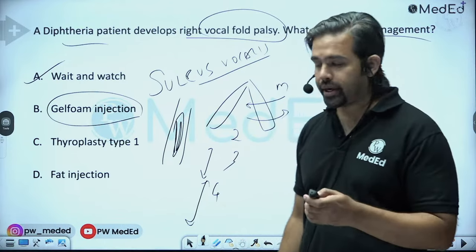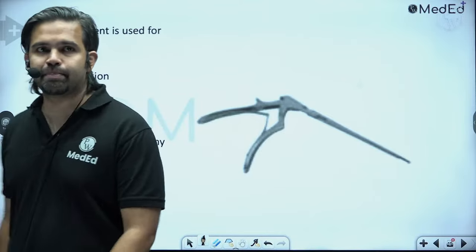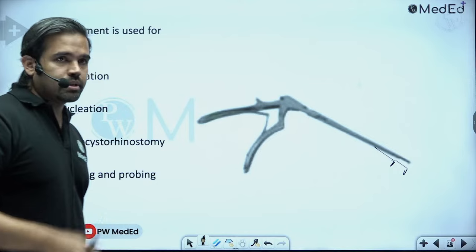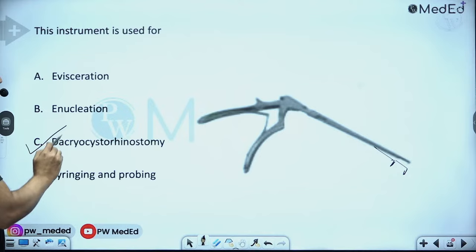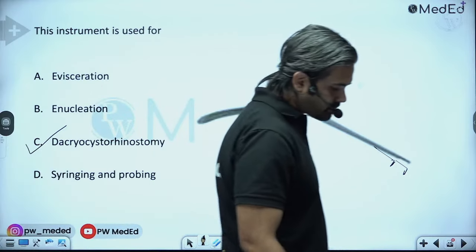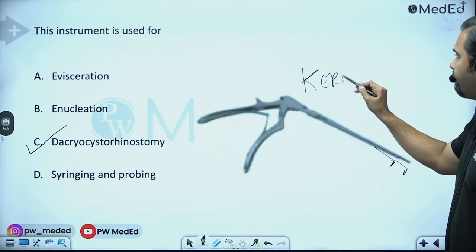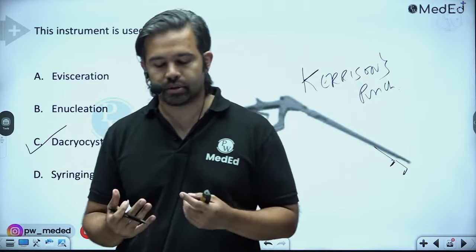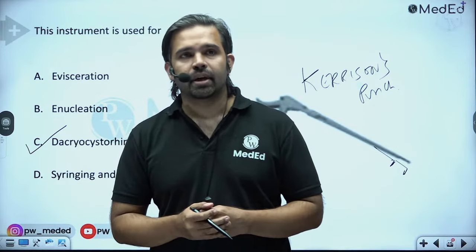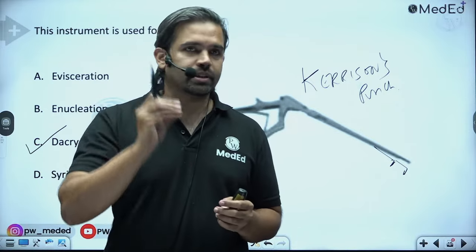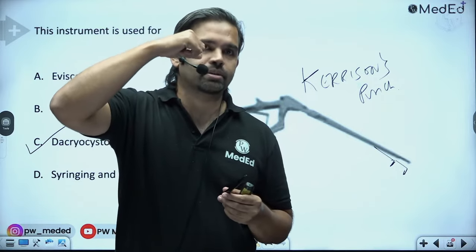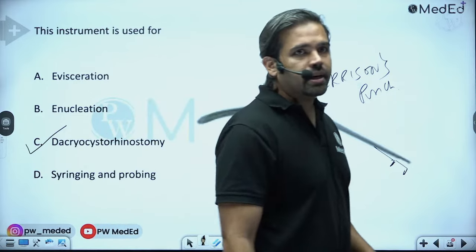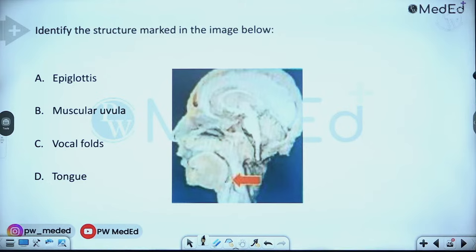An image shows an instrument resembling a punch used in dacryocystorhinostomy (DCR) — this is called the Kerrison punch. FMG frequently asks about endoscopic DCR, including Crigler's maneuver, massage, nasolacrimal duct obstruction, and this instrument. This has been asked at least three or four times in FMG exams.